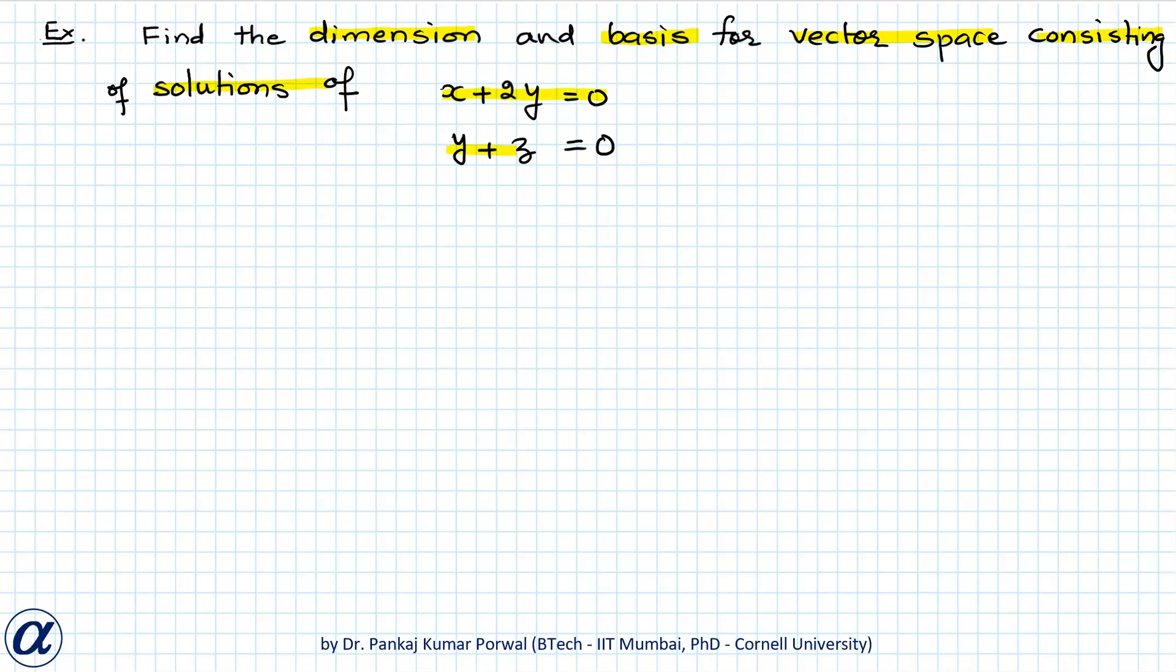Here note that n, that is number of unknowns, is 3—they are x, y, and z—and m, that is number of equations, is 2.